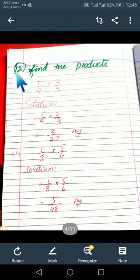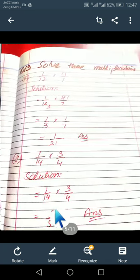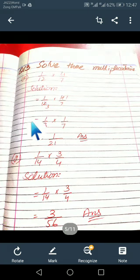Now question number 12: Find the products. Very easy and very simple. 1 by 9 into 2 by 3: 2 1s are 2, 9 3s are 27. 1 by 8 into 5 by 6: 1 5s are 5, 8 6s are 48. Complete the rest of the parts of question number 12.